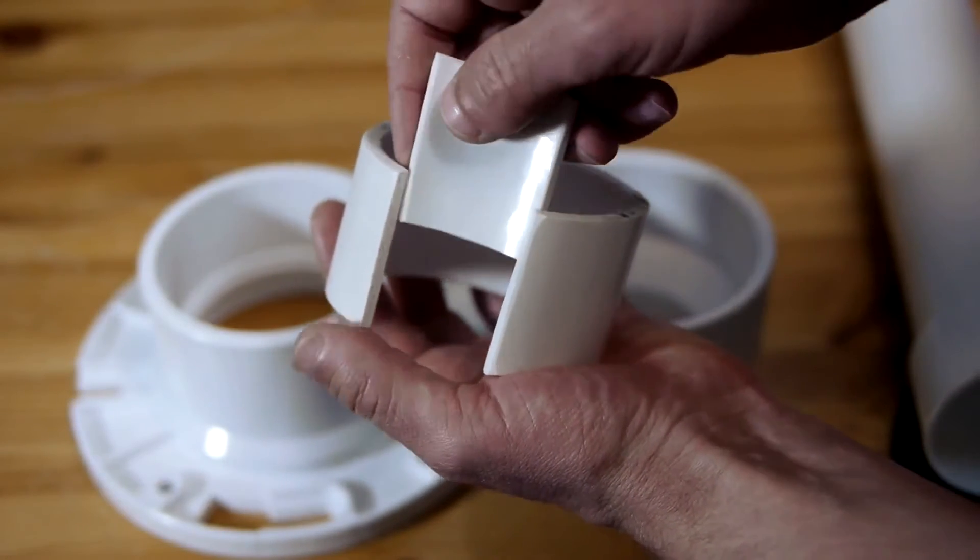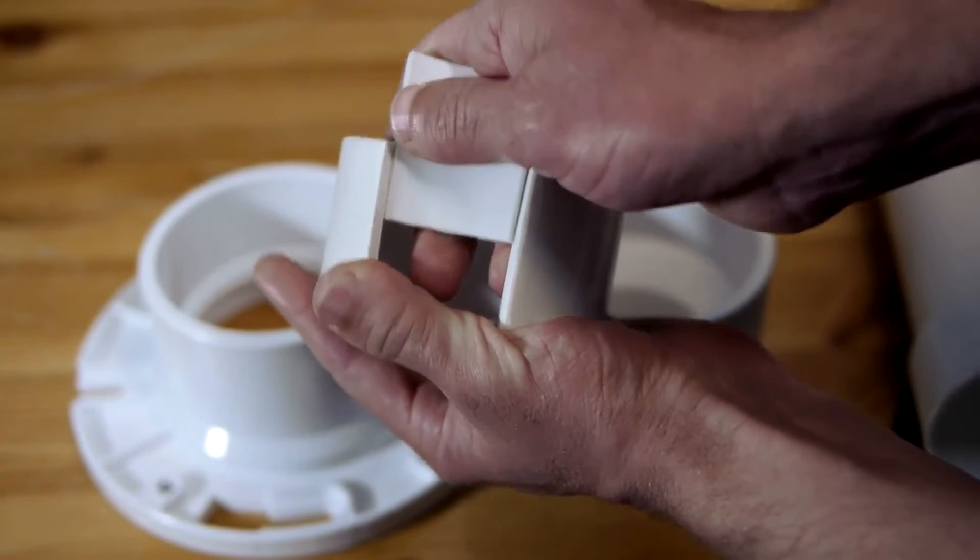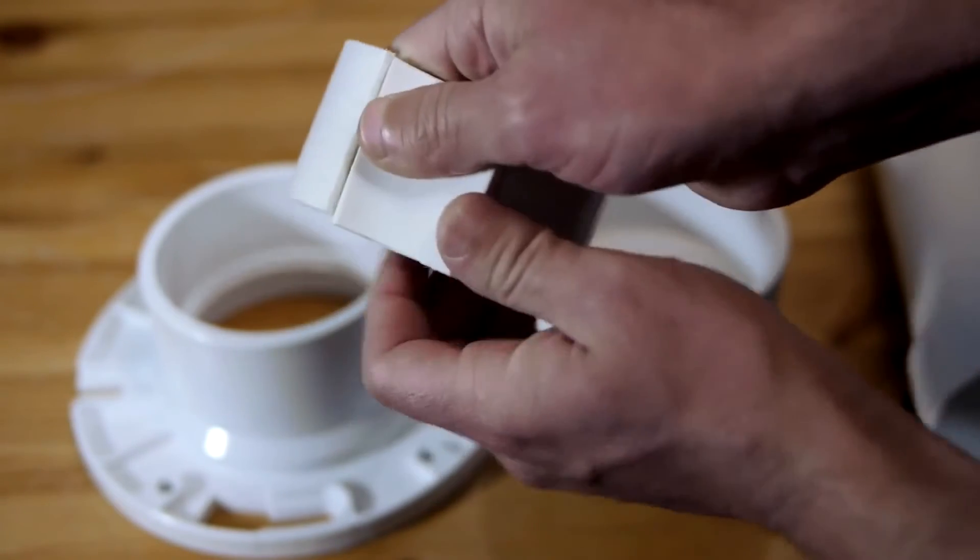Once the gap has been cut out with a handsaw, the section of pipe will want to spring closed slightly, making it too loose a fit to glue into the fittings.